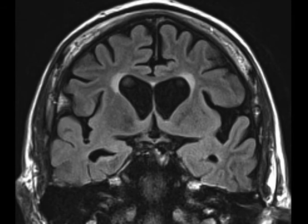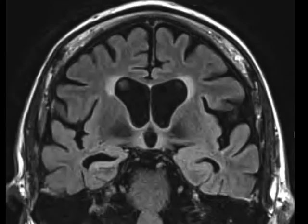On these dedicated coronal plane images, we see that the right hippocampus demonstrates marked volume loss and distortion of the normal morphology, as well as slightly asymmetrically increased signal on the T2 and FLAIR sequence images. There is corresponding dilatation of the temporal horn of the right lateral ventricle. The contralateral hippocampus appears within normal limits.